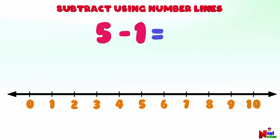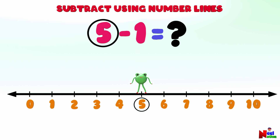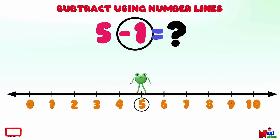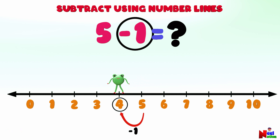What is 5 minus 1? Let's start by locating the number 5 on the number line. There you go. To take away 1 from number 5, starting from number 5, Mr. Lutu will jump one point backwards to the left. Where did he land? Number 4! So 5 minus 1 equals 4. You got it!